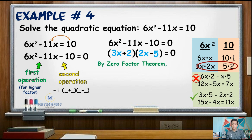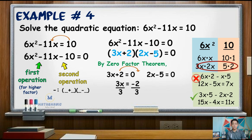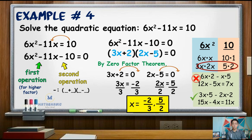By the zero product property, 3x plus 2 equals 0 and 2x minus 5 equals 0. For 3x plus 2 equals 0, transpose positive 2 to the right side — it becomes negative 2 — so 3x equals negative 2. Dividing both sides by 3 gives x equals negative 2 thirds. On the other equation, 2x minus 5 equals 0, transpose negative 5 to the right side to get 2x equals positive 5. Dividing both sides by 2 gives x equals 5 over 2. Hence, the solutions of 6x squared minus 11x equals positive 10 are negative 2 thirds and positive 5 over 2.